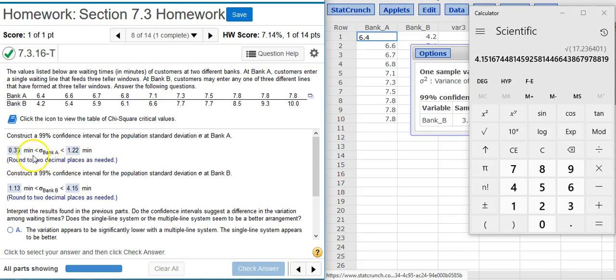And we see here that the range here is about a little less than one minute. For bank B with the multi-line system, we see that the range for our confidence interval is just above three minutes. So significantly longer range here for bank B than for bank A. That means there's much more variation here for bank B, which has the multi-line system, than for bank A, which has the single line system.